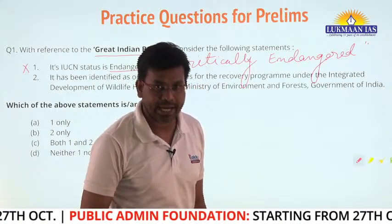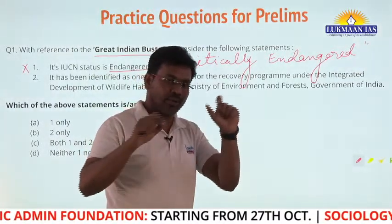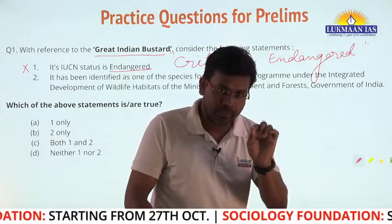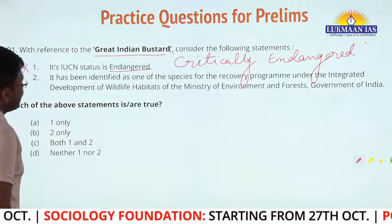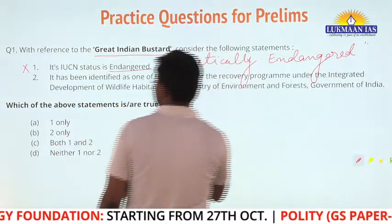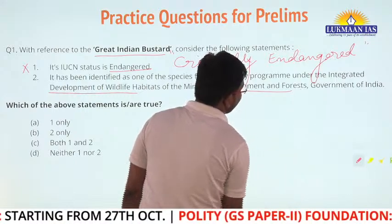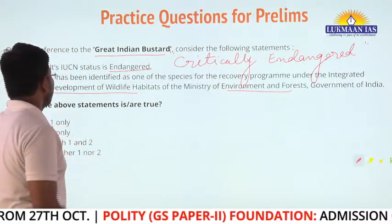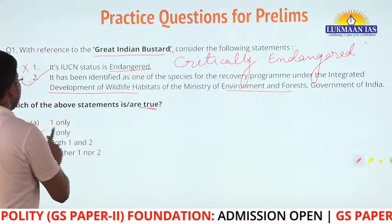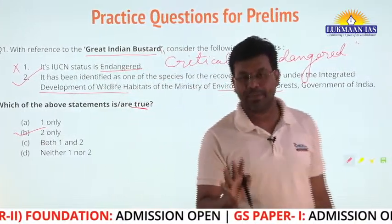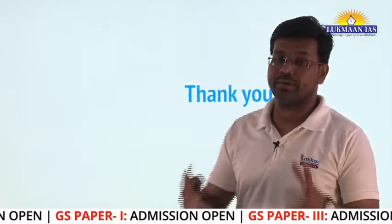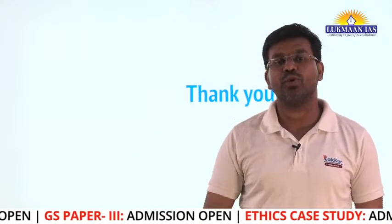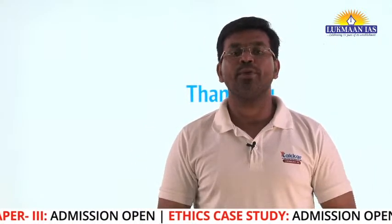The Great Indian Bustard is mentioned in Appendix 1 of CITES, in Schedule 1 of the Wildlife Protection Act 1972, and has only about 200 individuals globally, with more than 150 located in Desert National Park in India. The second statement says it has been identified as one of the species for a recovery program under the Integrated Development of Wildlife Habitats of the Ministry of Environment, Forest and Climate Change — this is correct. So only statement two is correct, making option B the right answer. Thank you everyone for attending today's session.